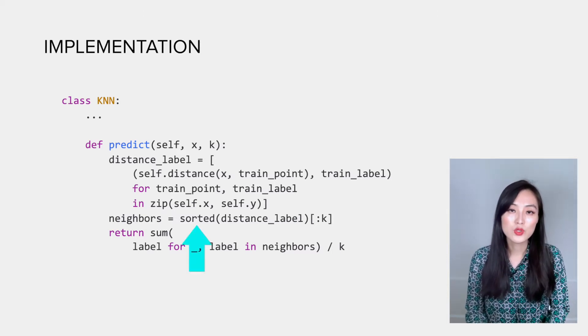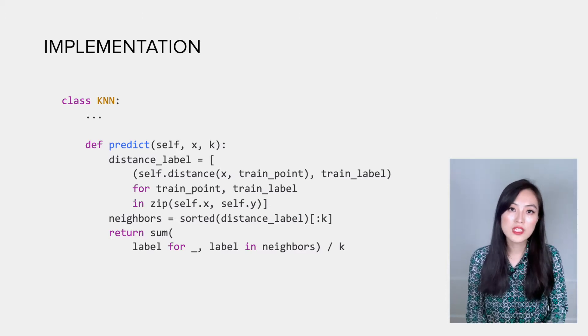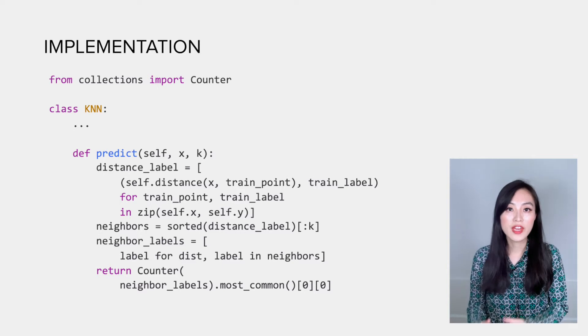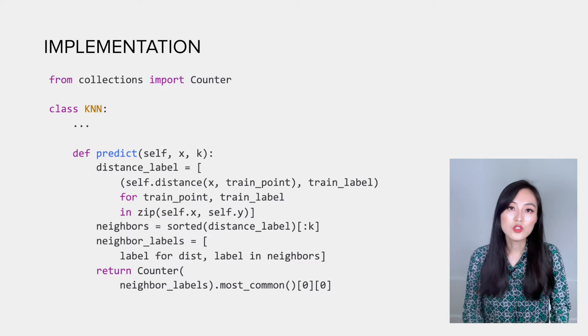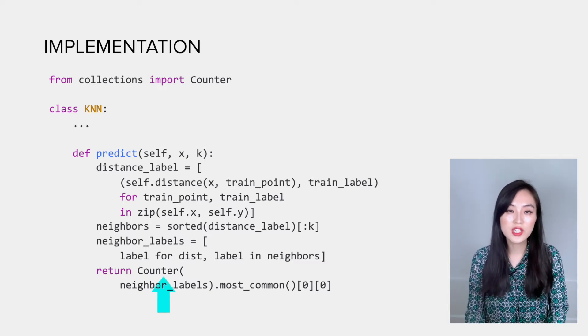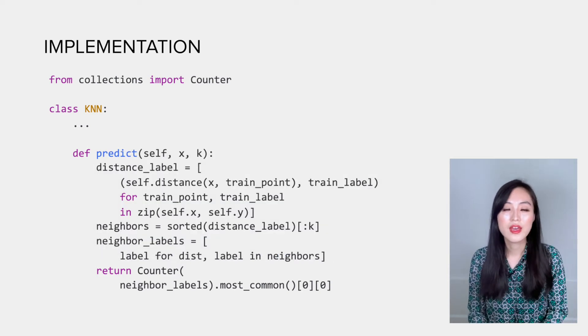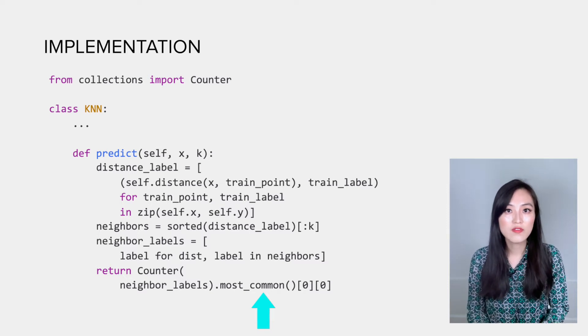To get the label for the new data point, if it's a regression problem, we can simply take the mean of the labels from all k neighbors. If it's a classification problem, we can count the majority of labels from its neighbors. To make it simple, we use the Counter class to generate a dictionary of counts with keys being the labels and values being the count. Then we use the most_common function of Counter to return the highest voted label.